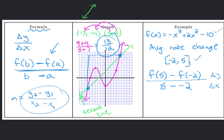If I plug in 5 into this function, I will get negative 85. And if I plug in negative 2, I will get 6. So negative 85 minus 6 over, this goes to 5 plus 2. So negative 91 over 7 is negative 13.